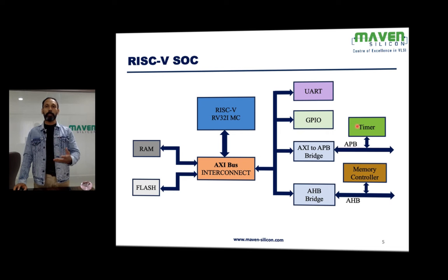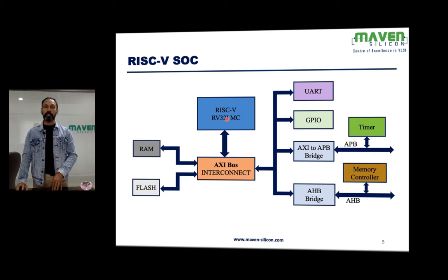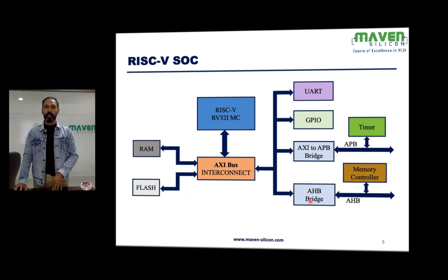There could be a low-performance device like a timer or keypad based on a simple interface like APB. So we need a bridge like AXI to APB to connect the processor, which is based on AXI, to components like a timer which are based on APB. If there are any other components based on AHB protocol — in this case there is an IP memory controller based on AHB — we need an AXI to AHB bridge. Then we also connect components like RAM and storage memories like flash.